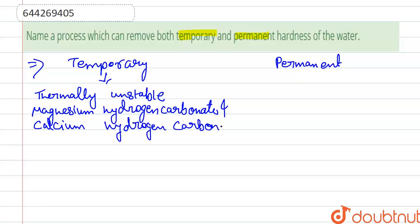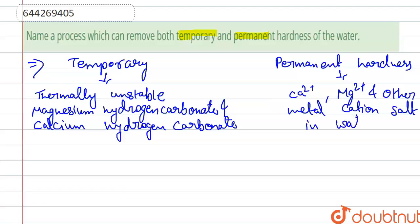And here, permanent hardness is caused by the presence of calcium Ca2+ and magnesium Mg2+ and other metal cation salts in water. The presence of Ca2+ salt and magnesium salt and other metal cation salts in water causes permanent hardness.